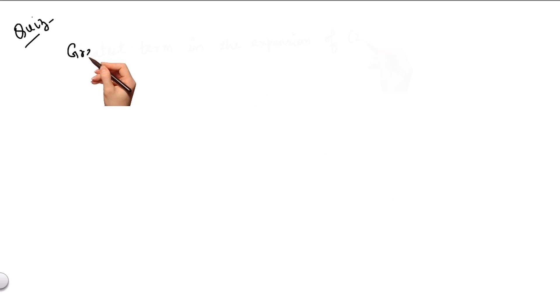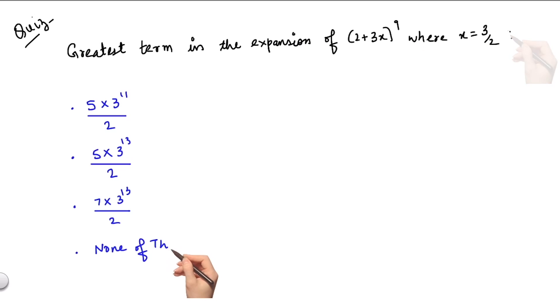The greatest term in the expansion of (2 + 3x)^9 where x = 3/2 is the options are the following.